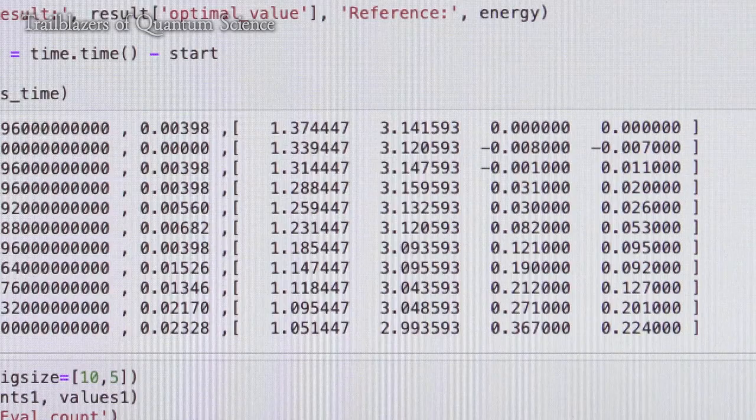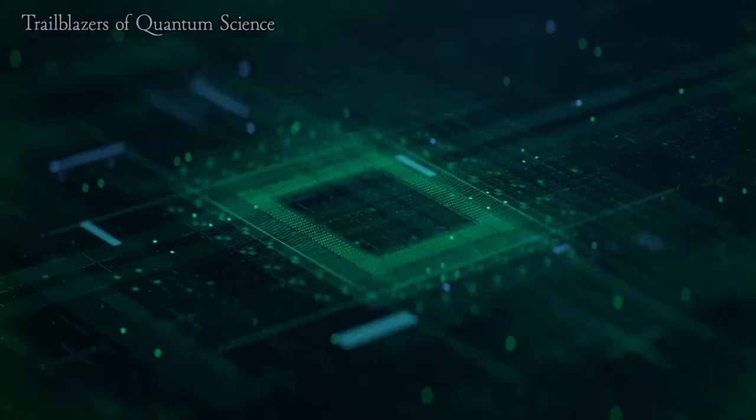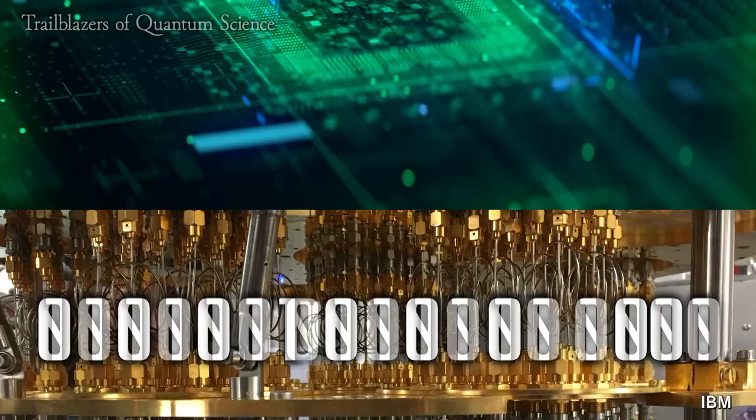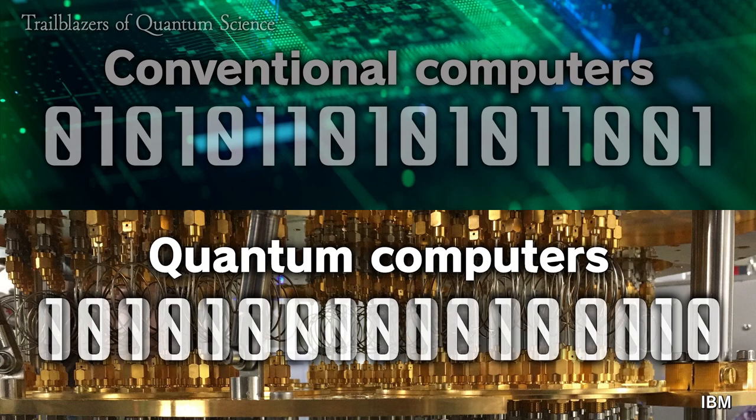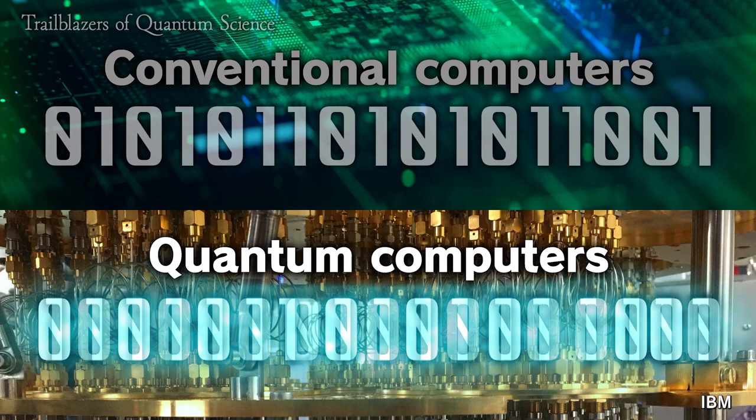How does a quantum computer work? Conventional computers express information using 0 or 1. Meanwhile, quantum computers express information using a state in which 0 and 1 are superposed. In addition, this process of generation and manipulation of quantum entanglement is expected to realize calculation speeds that haven't been achieved by conventional computers.